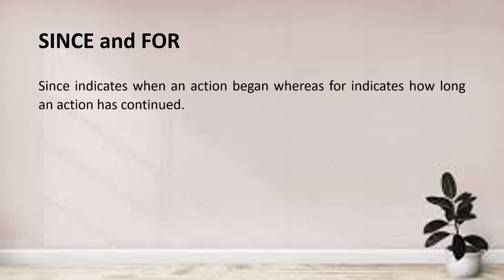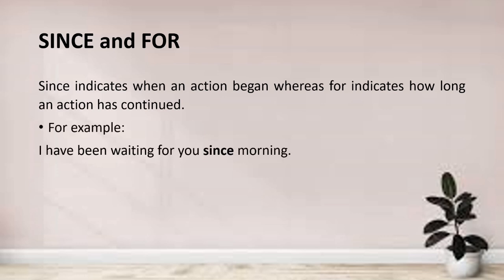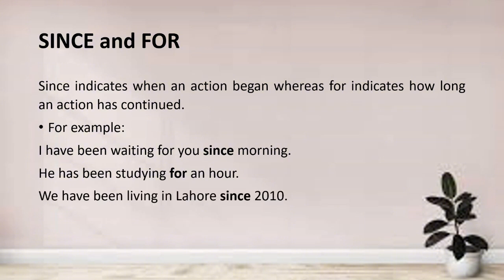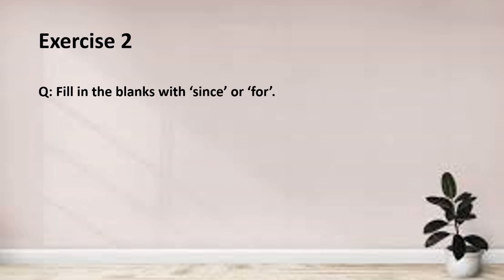Now I'll tell you about since and for used as prepositions in sentences. Since indicates when an action began, whereas for indicates how long the action continued. For example: I have been waiting for you since morning — the action began in the morning, so we use 'since'. He has been studying for an hour — the action lasted for an hour, so we use 'for'. We have been living in Lahore since 2010 — the action began in 2010, so we use 'since'.